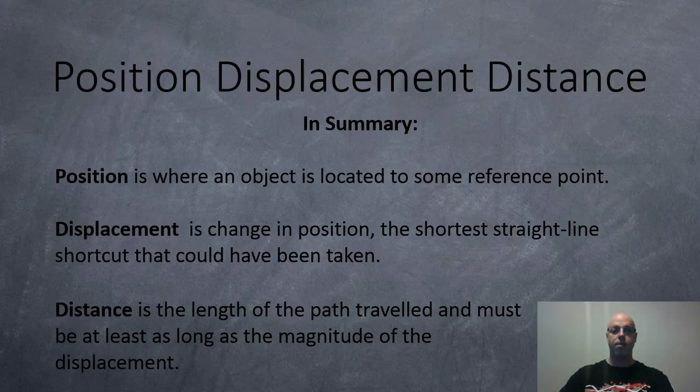Okay, so in summary, position is where an object is located relative to some reference point. Displacement is the change in position, the shortest straight line shortcut that could possibly have been taken. And distance is the length of the path traveled and must be least as long as the magnitude of displacement, unless of course you do something magical like teleport. And that's it for this video.